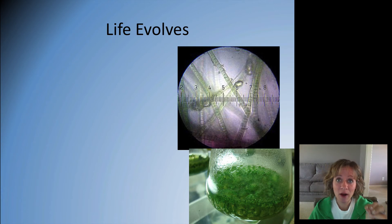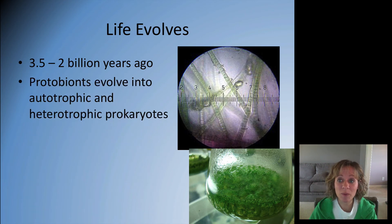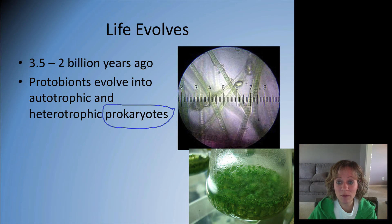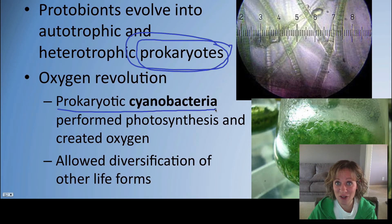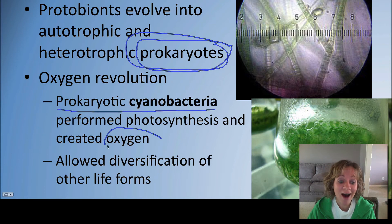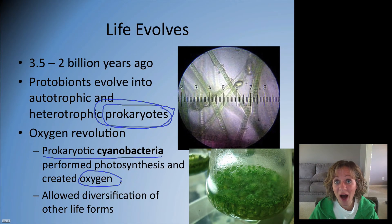So we went from building block to polymer to protobiont, and now we're beginning to have actual life. Between 2 and 3.5 billion years ago, these protobionts evolved into actual autotrophic and heterotrophic cells — the first cells were prokaryotes, which are simple, have no nucleus, and no membrane-bound organelles, like bacteria. Then we have the oxygen revolution, caused by prokaryotic cyanobacteria that were able to perform photosynthesis, releasing oxygen as a product. The Earth owes its early oxygen atmosphere to cyanobacteria, and this allowed the diversification of other life forms that could use and thrive on oxygen.